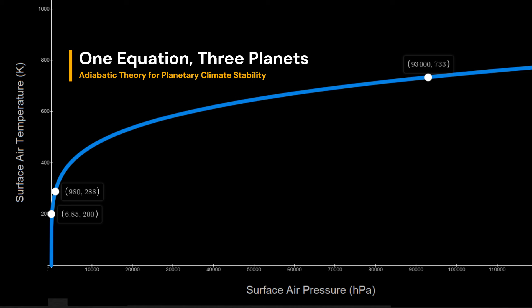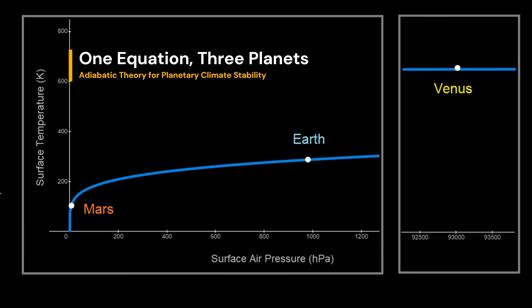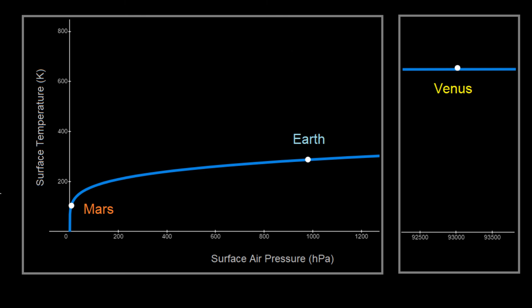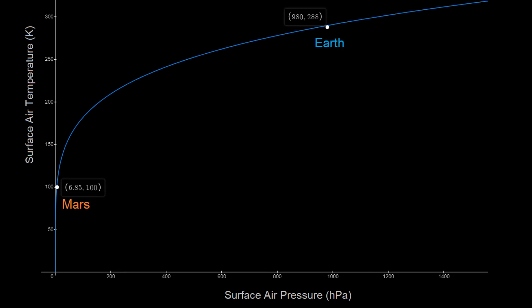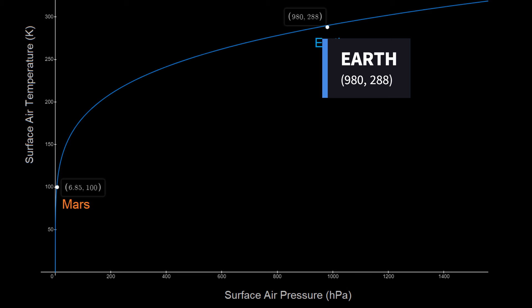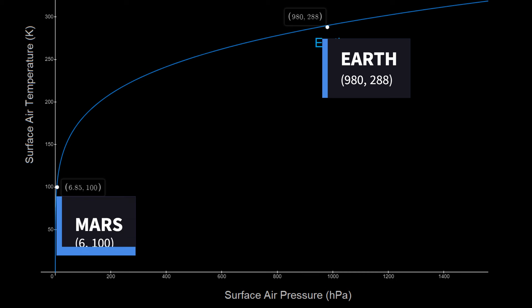As the surface pressure on Venus is nearly 100 times higher than that on Earth, I am obliged to display Venus separately for your convenience. The coordinates 93,000 and 733 are their air pressure in hectopascal and air temperature in Kelvin, respectively. Similarly, it is necessary to enlarge the position for Mars and Earth, as the surface air pressure of Mars is only 6 hectopascal, or 600 pascal. For Earth, the surface pressure and surface temperature are 980 hectopascal and 288 Kelvin, respectively. Using the mean surface air pressure of Mars of 6 hectopascal, the theoretically calculated GMST of Mars is only 100 Kelvin, which is about 100 Kelvin lower than the mean value used in Martian climate modeling.